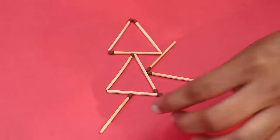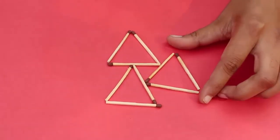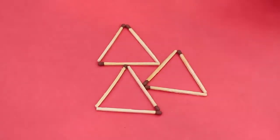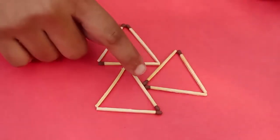Well, it is quite easy. Just shift the three sticks of the lower triangle as shown, and a smaller fourth equilateral triangle will emerge in the center.